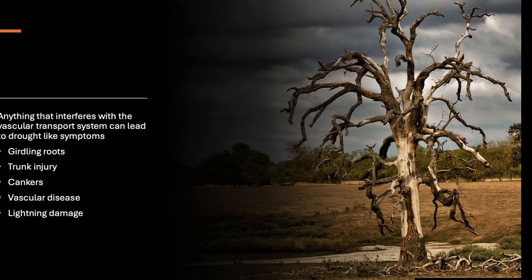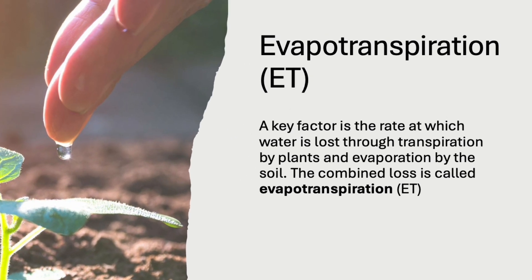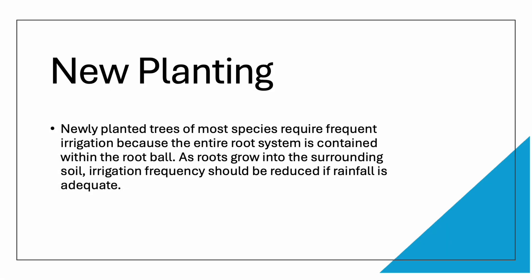Trees lose 95% of the water they take in through transpiration, but they also lose water through evaporation. The combined loss is called evapotranspiration, or ET. The soil moisture reservoir is simply the volume of soil that the tree occupies. Newly planted trees have a much smaller root system, usually limited to the root ball, so they need more frequent irrigation as the roots grow into the surrounding soil. The frequency of irrigation should be reduced, assuming there's adequate rainfall.